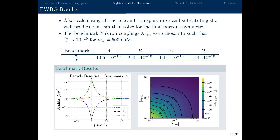For these benchmark points you can readily generate the required baryon asymmetry. With a vector-like lepton mass of about 500 GeV, for each of the four benchmark points you can generate the right asymmetry of order 10^{-10}. The bottom-right plot shows, as a function of the two Yukawa couplings between the singlet scalars and the vector-like and standard model leptons, a contour plot of the final baryon asymmetry. Even for coupling values of 0.1 or 0.01 you can more or less generate the right baryon asymmetry. You can generate an order of magnitude more asymmetry than needed if you allow couplings as large as one.